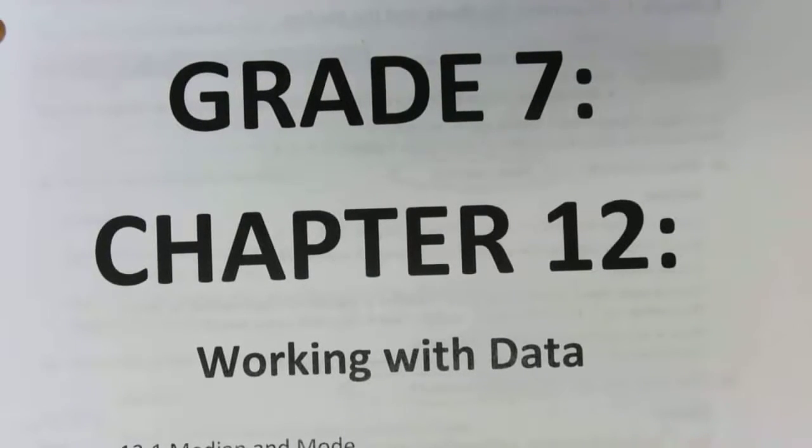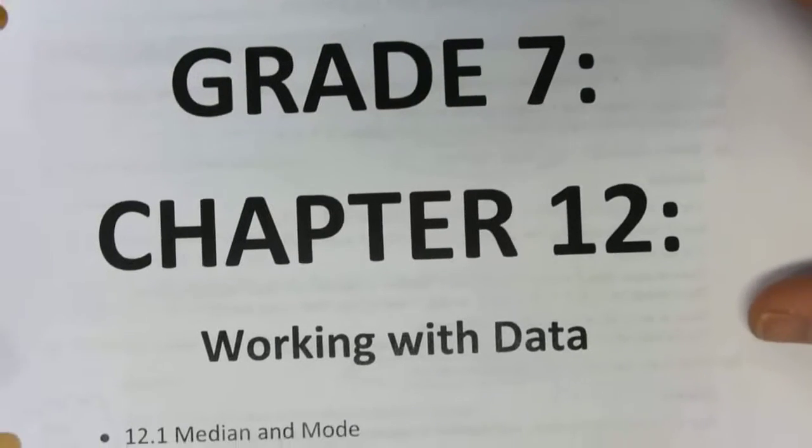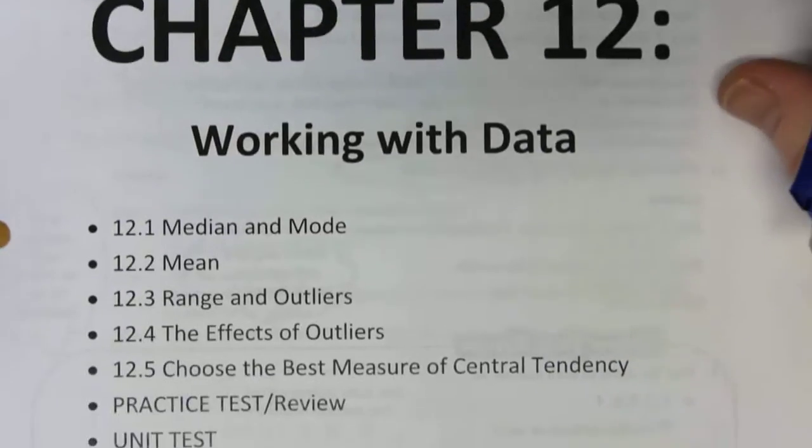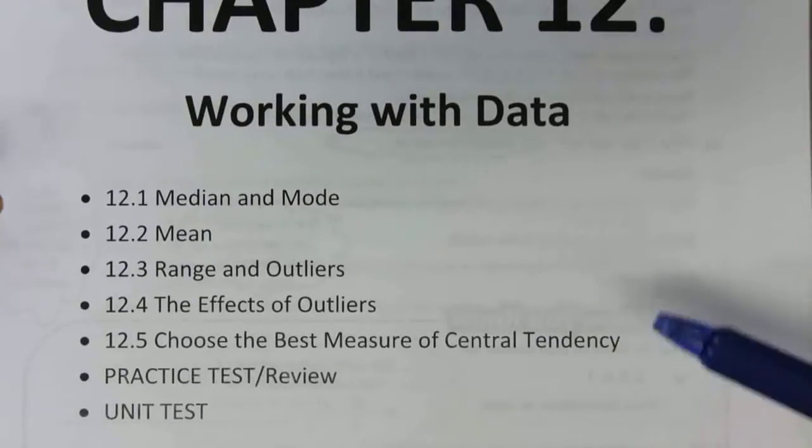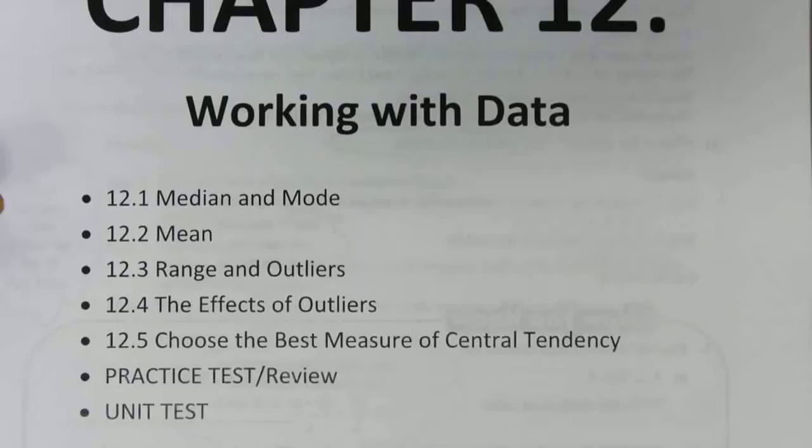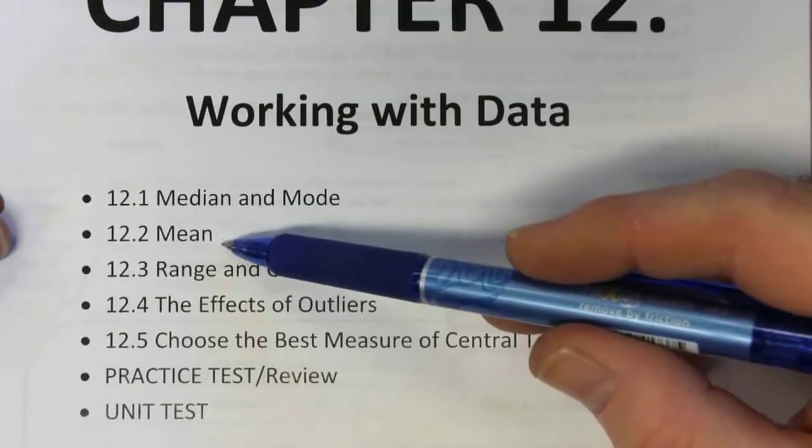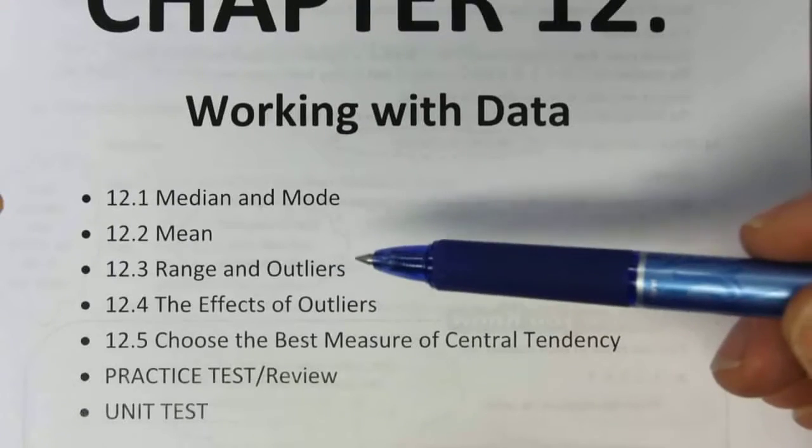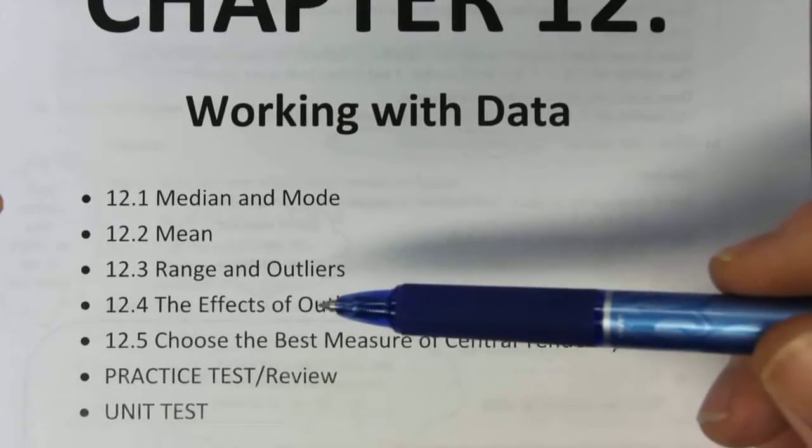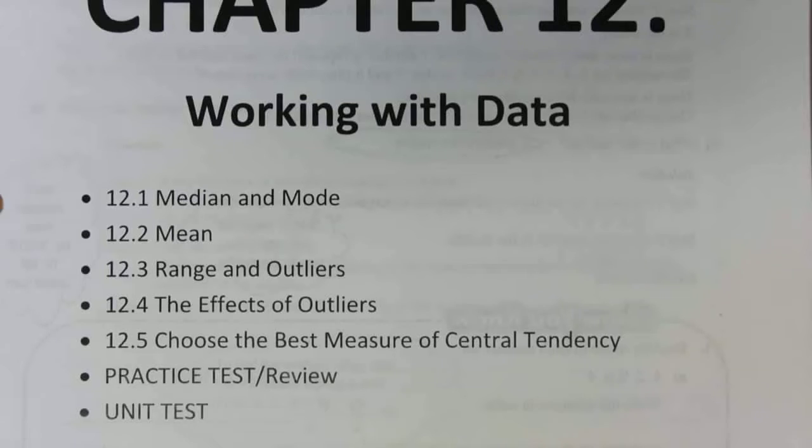This is our final chapter in grade 7 math. It's Chapter 12 and it's called Working with Data. As you can see here, there are five sections for this chapter: 12.1 Median and Mode, 12.2 Mean, 12.3 Range and Outliers, 12.4 The Effects of Outliers, and 12.5 Choosing the Best Measure of Central Tendency. So we'll go through all five sections. There'll be a little bit of review time, and then we'll give you a test.